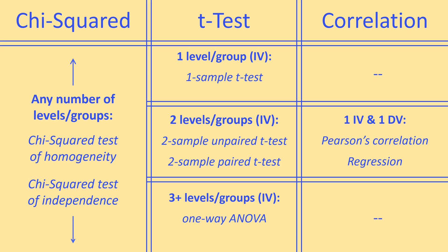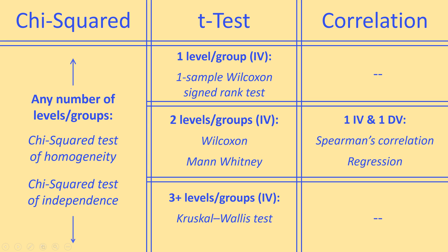An important thing to understand is that many of these tests make assumptions about your data. The most common assumption is that your data is distributed normally, or follows a Gaussian distribution. If you don't satisfy that assumption, you would not want to use the test because you'll get bad, unreliable results. The good news is that many of these tests have a nonparametric alternative or counterpart, and here are those alternatives for some of the tests covered.